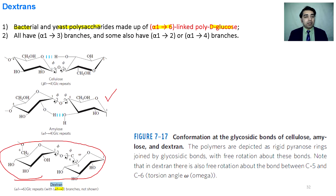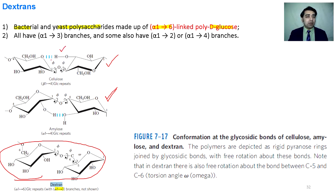We have already discussed the amylose structure formed by the alpha-1,4-glycosidic bond of alpha-D-glucose, and cellulose is formed by beta-D-glucose through 1,4-glycosidic bonds. These structures also have phi and psi angles, where phi is the rotation of the first monomer around the glycosidic bond and psi is the rotation of the second monomer around the glycosidic bond.